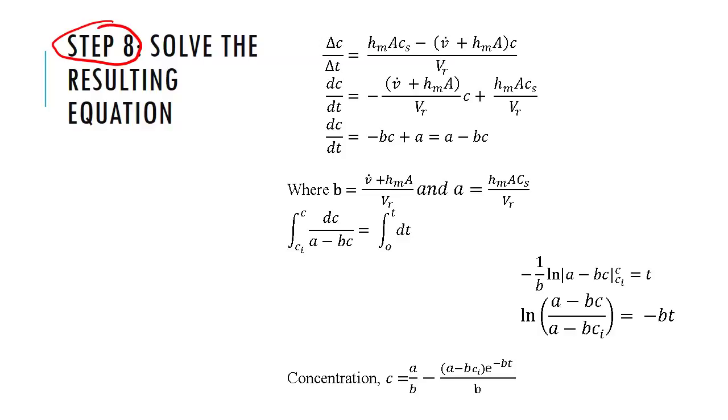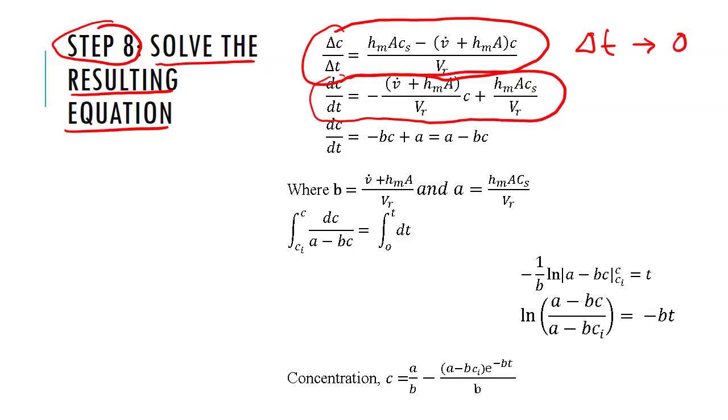So now we are in step 8, and we want to solve the resulting equation. So this has been our resulting equation. And if I make delta T go to zero, then that gives us the differential equation. Now this differential equation has many terms like this. They are constant but they are kind of clumsy to work with. So I will call B as this term, this entire term here, and likewise this one I will call A. So this A and B are constant. So now it looks a little more decent. V dC dT equal to A minus BC, where the B and the A are given like that.